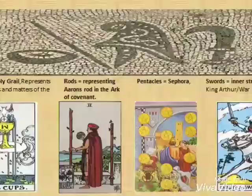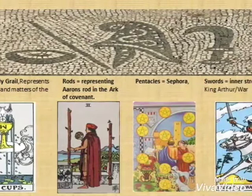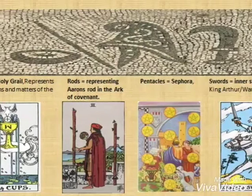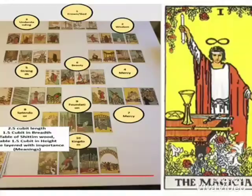The four suits of the tarot cards are representative of the four letters within each of the Ten Commandments. Because these cards were written by a Jesuit, there's the Holy Grail, Aaron's Rod, Pentacles representing the Sephiroth, and a sword representing King Arthur or military. The Mythra and Mosaic above I believe represents the four suits of tarot as they originally were. The Magician card has all the suits laid out on the table.